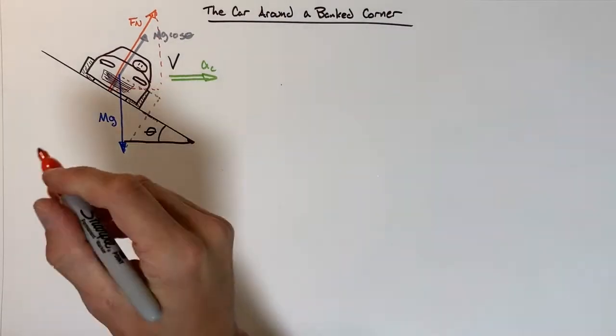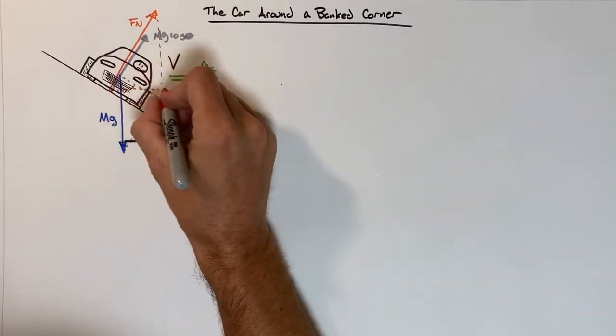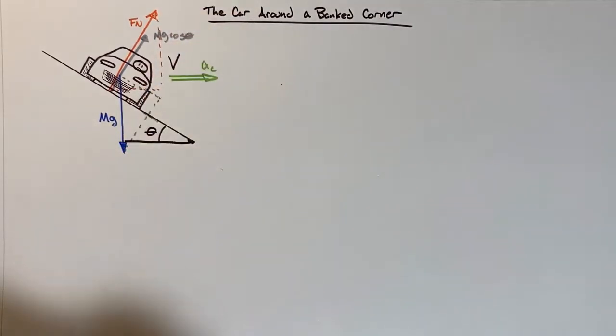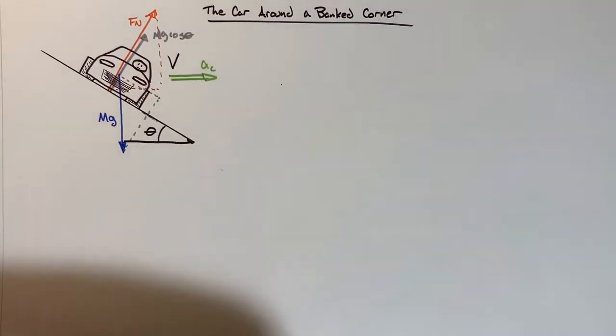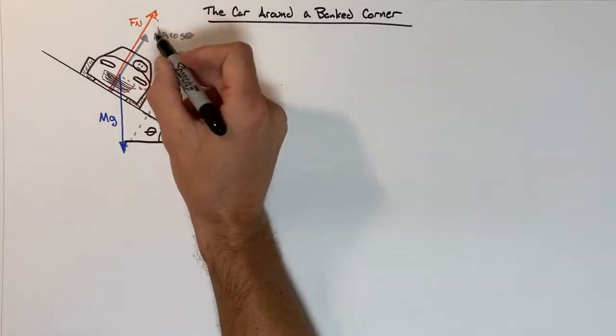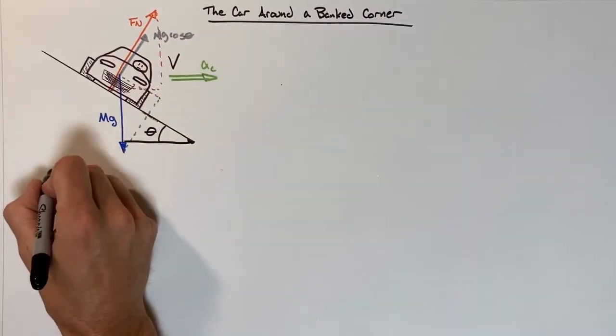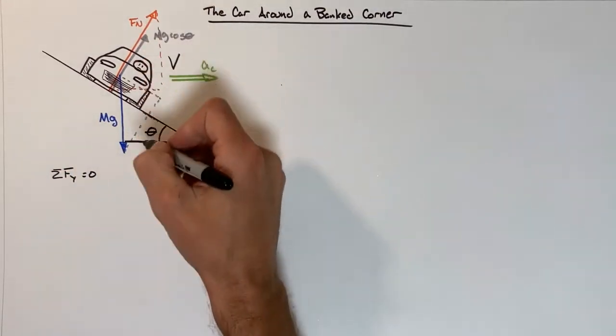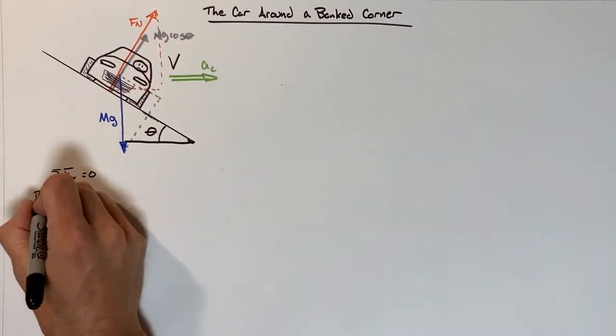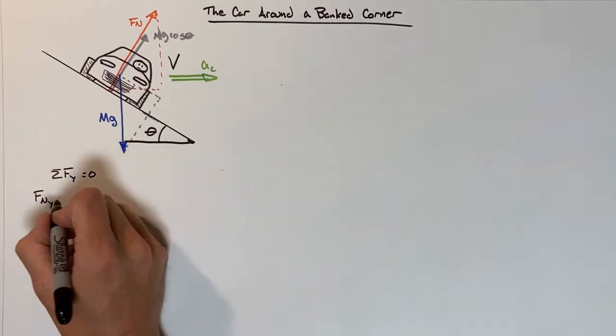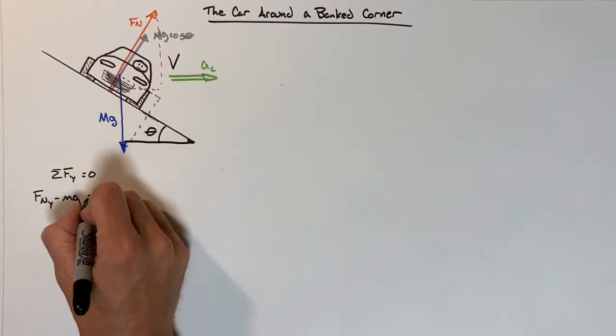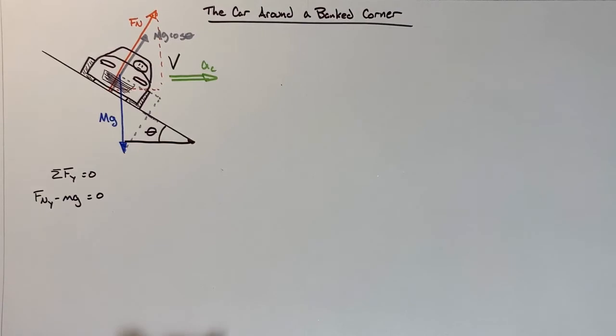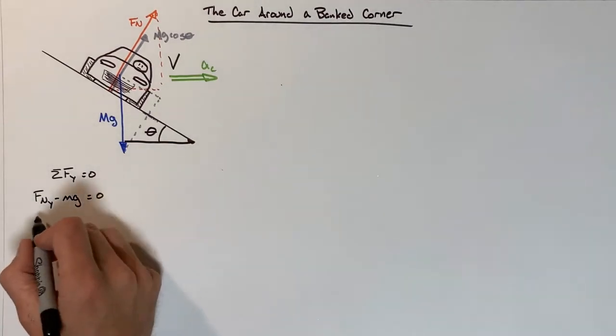So we're going to look at Fn in the x direction and Fn in the y direction in order to solve this problem. The first thing that we need to recognize is that the sum of all forces in the y-axis is zero. Now the forces acting vertically on this car are Fn in the y-axis and mg. Those need to add up to zero, so we can see that Fn_y is equal to mg.